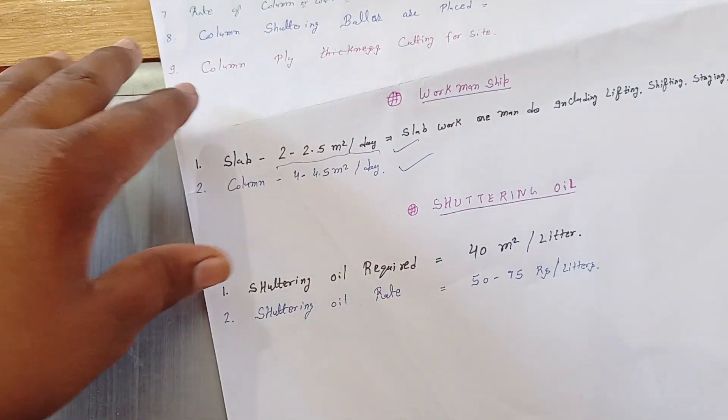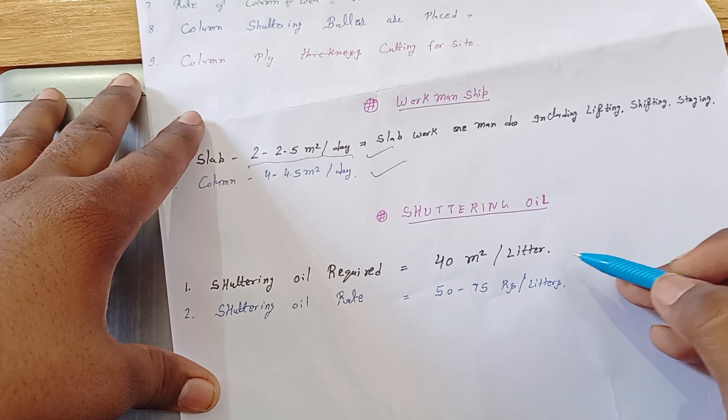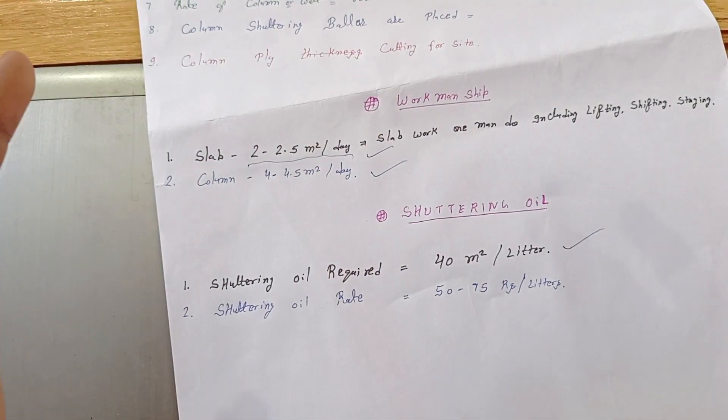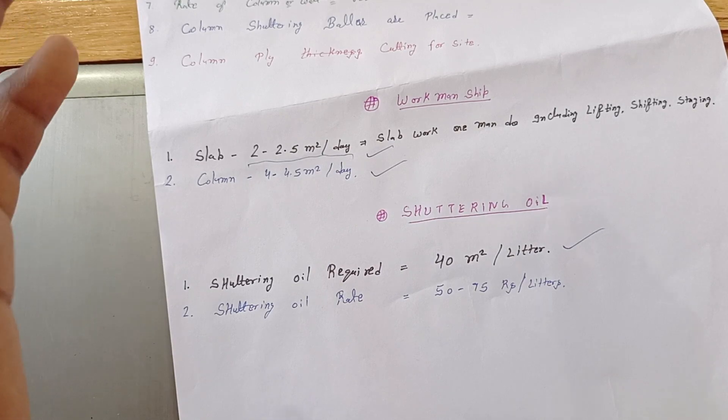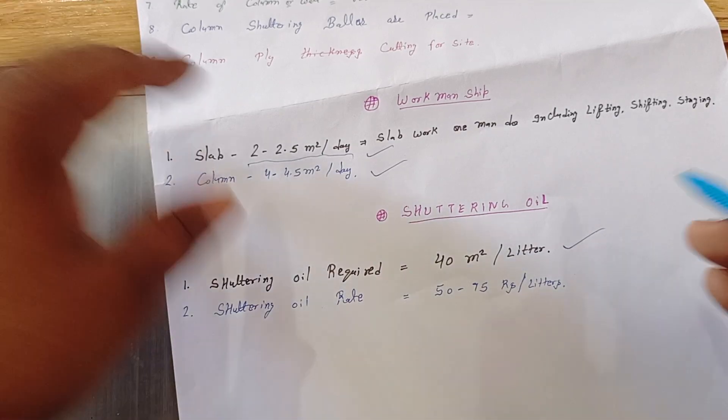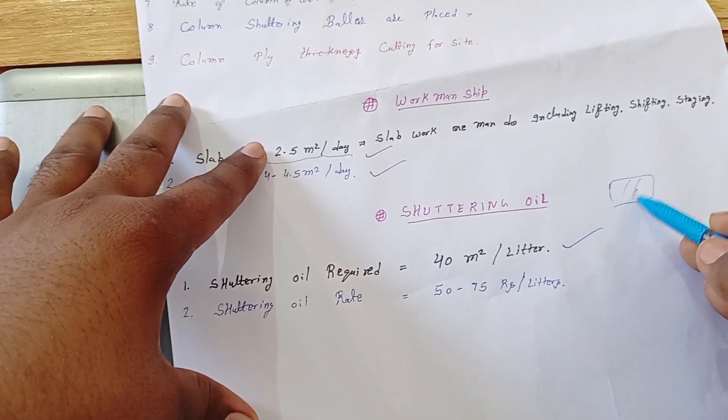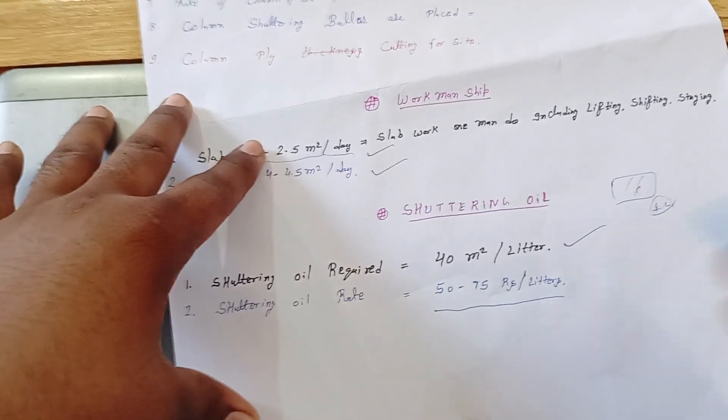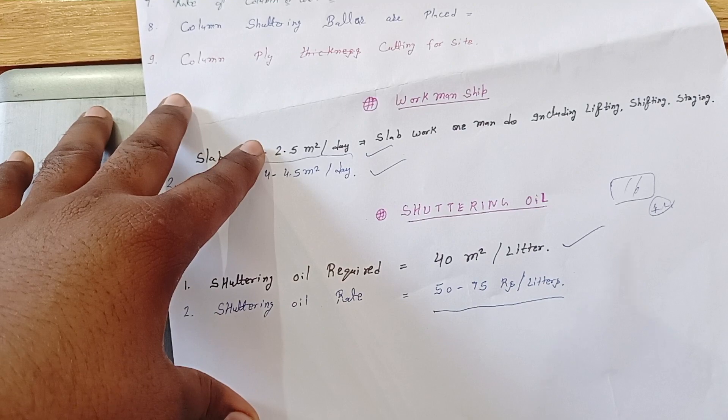Next they will ask about column 4 to 4.5 m² per day. Next question, shuttering oil required 40 m² per liter. Shuttering oil generally required 40 m² per liter. So for 40 m² per liter is required 1 liter of shuttering oil. Shuttering oil generally market rate is equal to 50 to 75 rupees per liter.